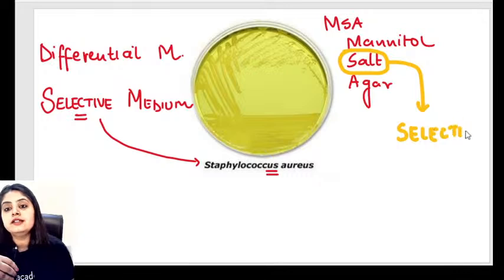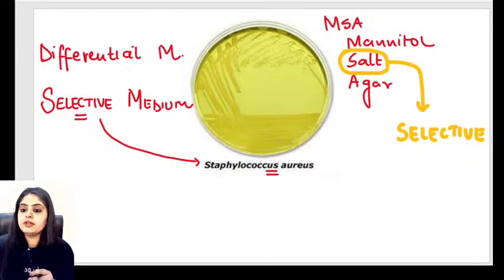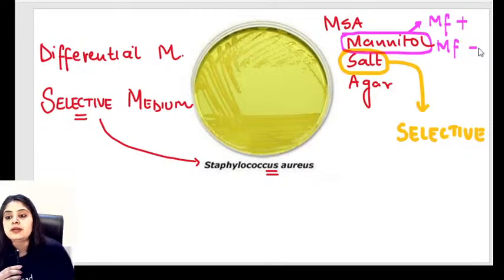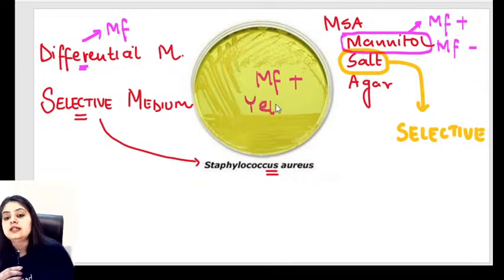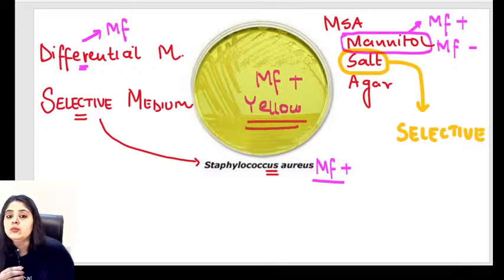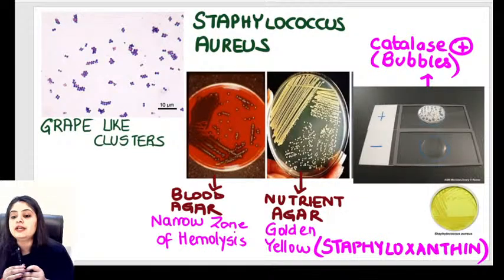When I say selective medium — selectively for Staphylococcus aureus. The high salt concentration makes it selective, as only Staphylococcus aureus grows in high salt. For differential: the other component is mannitol. They are differentiating whether the organism is mannitol-fermenting or not. The differential aspect comes from mannitol fermentation.